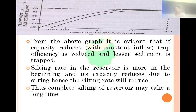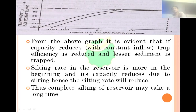Initially, it may lose 10 MCM of capacity in 5 to 10 years, but the same 10 MCM loss later may take 20 to 30 years. So, the complete silting of the reservoir takes a long time. Initially, silting in the first 5 years may be 5 times greater than silting in later years, which may take 10 to 20 years for the same amount.